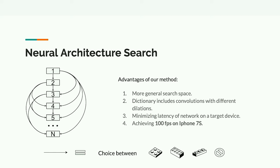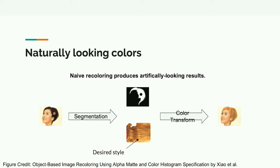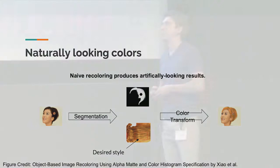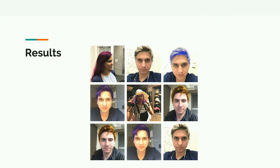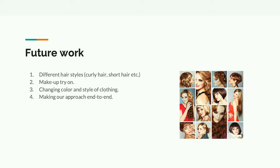We were able to achieve 100 frames per second on iPhone 7. The next challenge was making the color look more natural — naive recoloring of the selected region doesn't really work. So we applied a more sophisticated technique called histogram specification, which allows users to specify a desired style and transfer it to the target region throughout the application. Some of the styles are quite bold, others more standard — you can choose whatever you like.